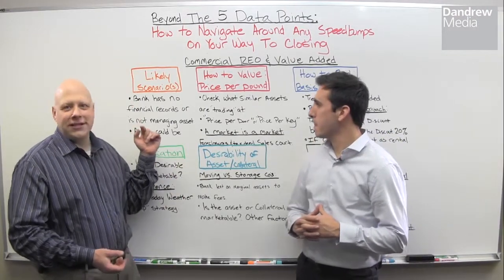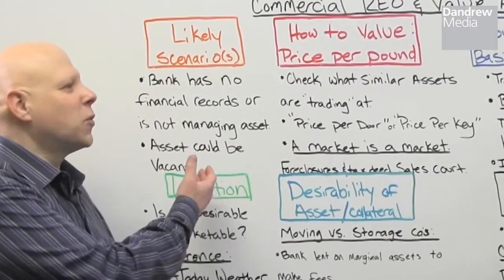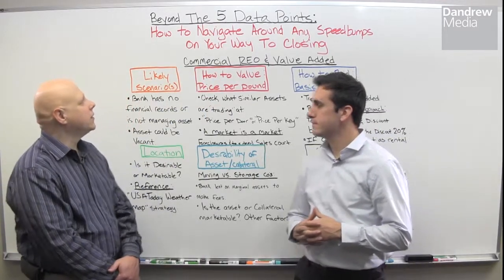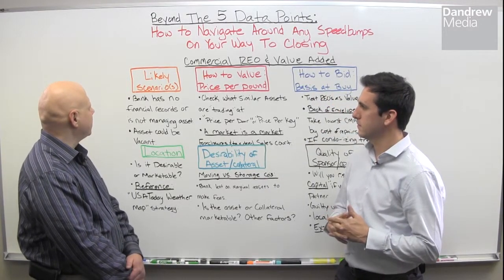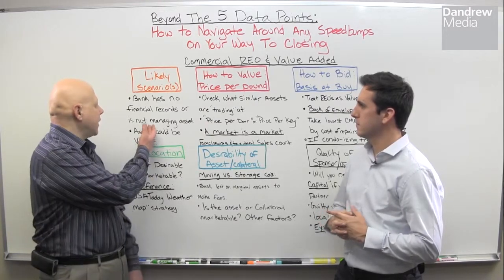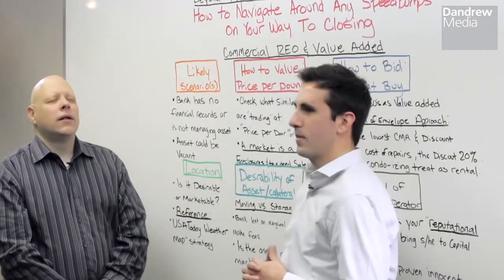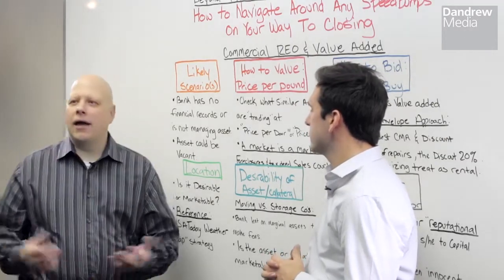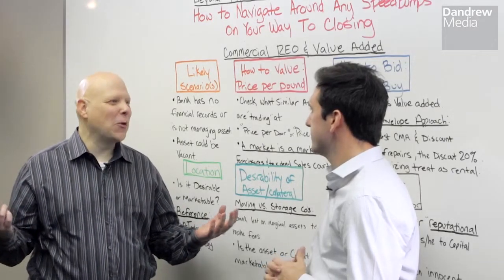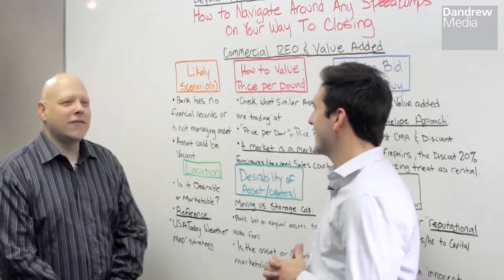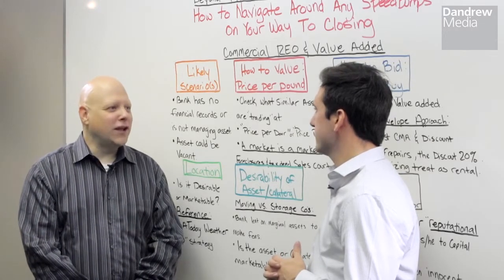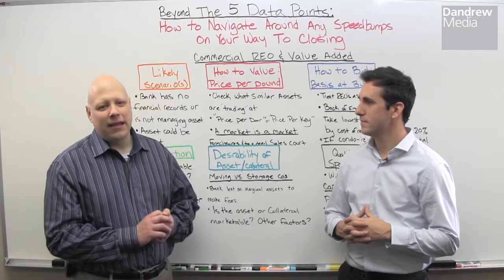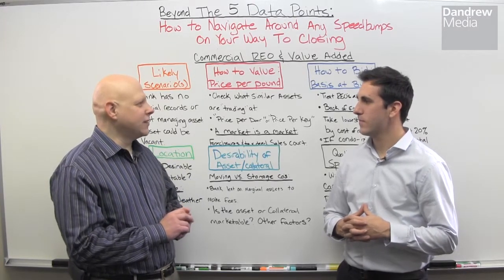On the infographic, the first column is Commercial REO — value-added. The likely scenario here is that the bank has no financial records and is not managing the asset. Banks have not been in the business of managing income-producing commercial assets. You have to have good financial records to understand how a property is performing — to know the NOI and historical performance.